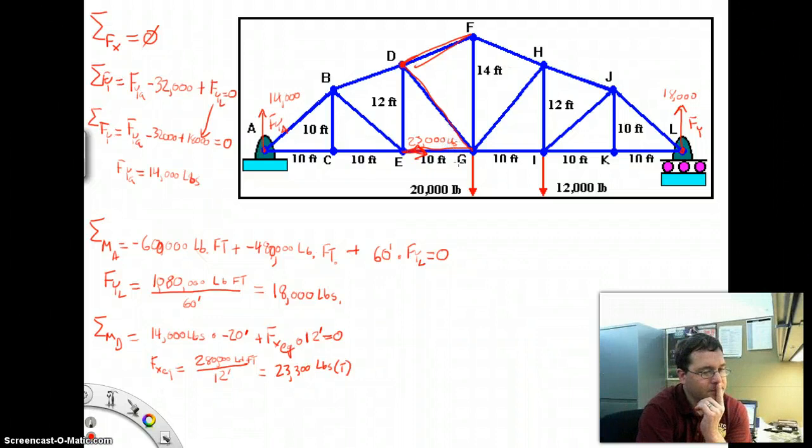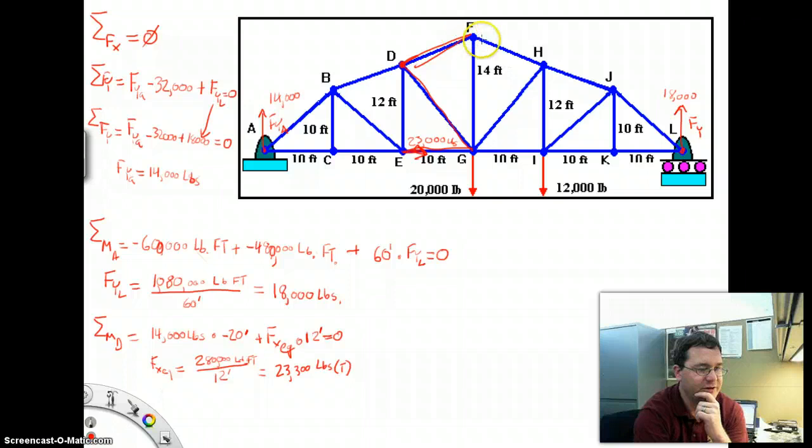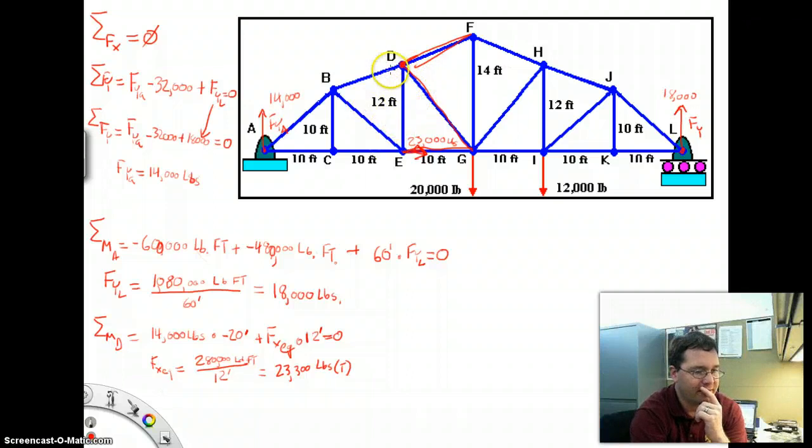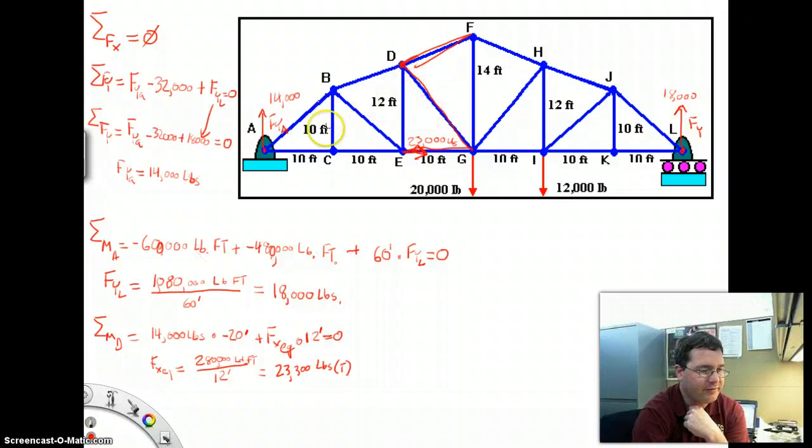Now let's think about these two forces. What are some things we know about DG and DF? I know that collectively, DG and DF need to provide a 23,000 pound leftward push on the structure. And I know that because EG is pulling to the right with 23,000 pounds. I also know collectively that DF and DG need to produce a 14,000 pound downward thrust. And that is to counteract this upward thrust here.